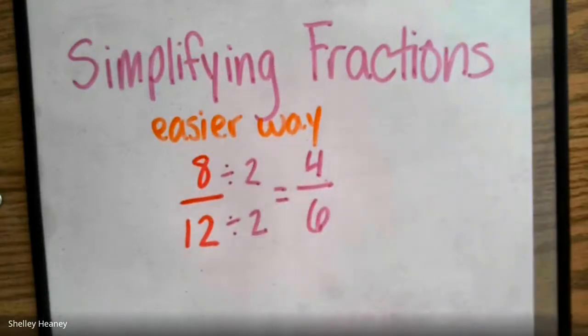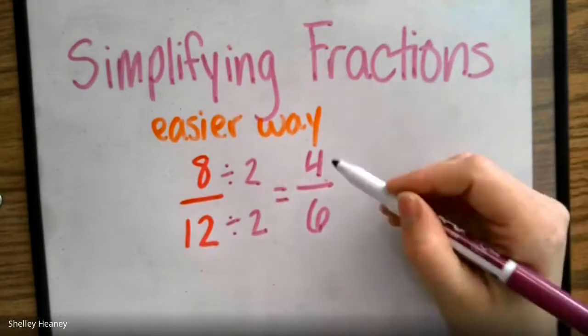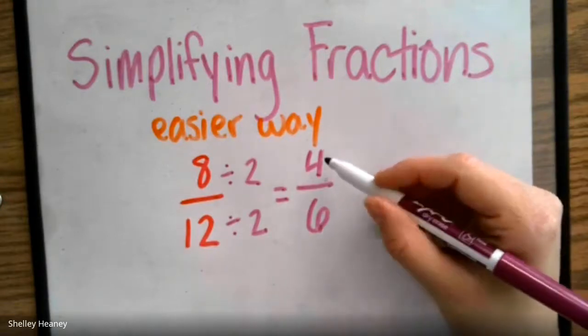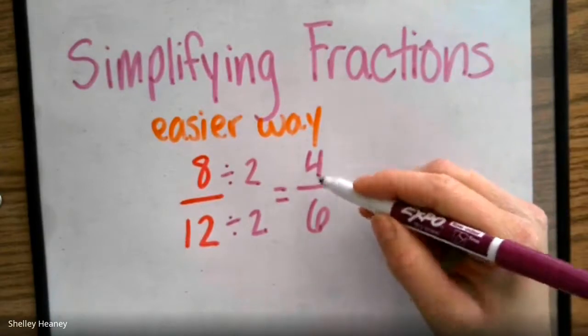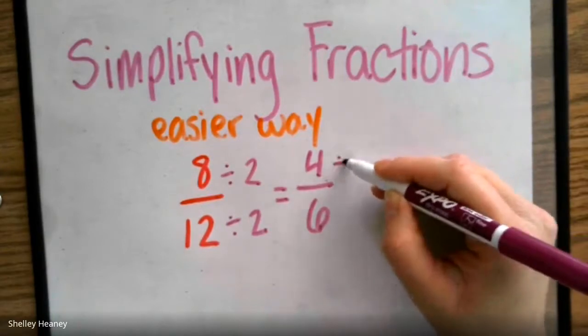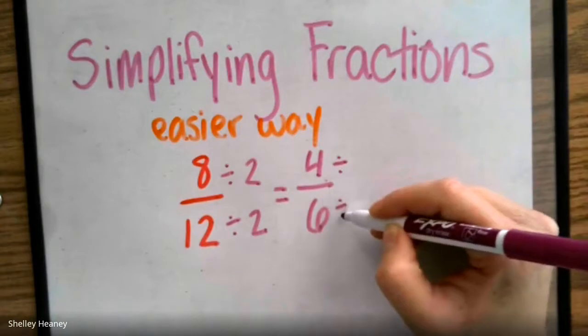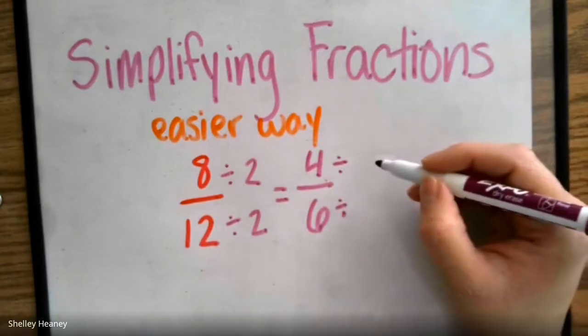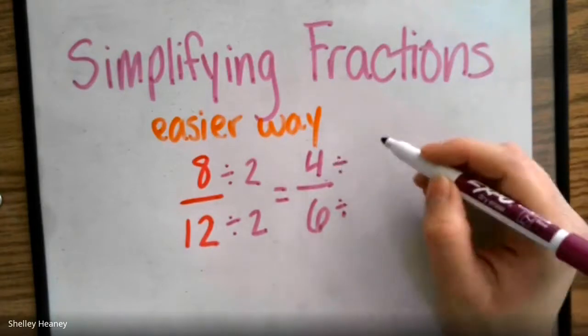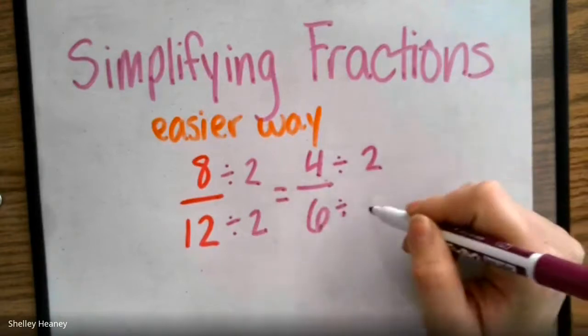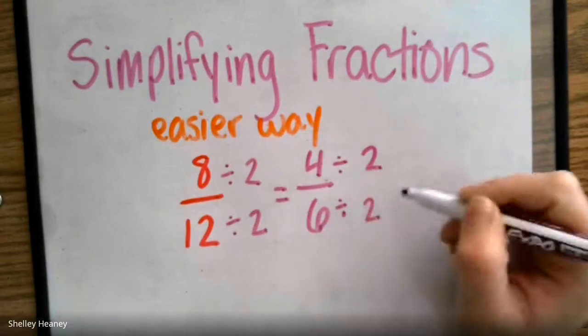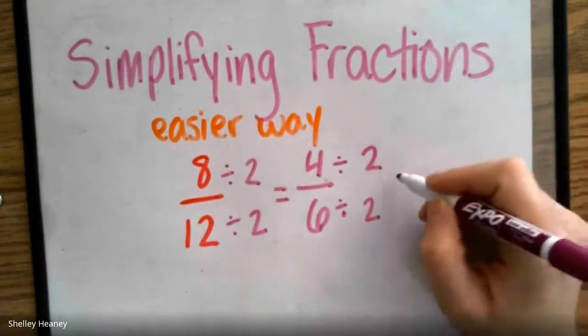Can we simplify 4 sixths more? We can. 4 sixths can be simplified because I can divide on the top and the bottom by another number. And this is where our fact fluency comes into play. 4 divided by what? I can do 2. 6 divided by what? What we do on the bottom, we've got to do on the top.